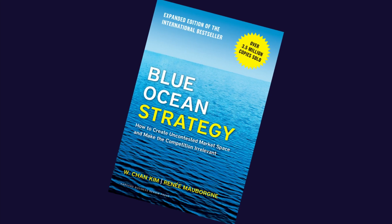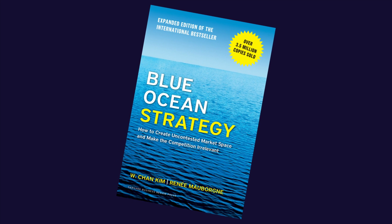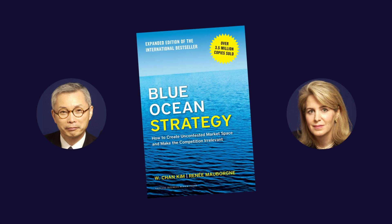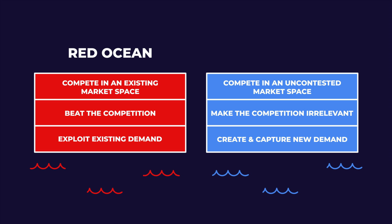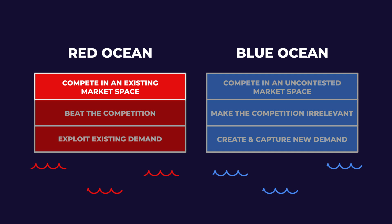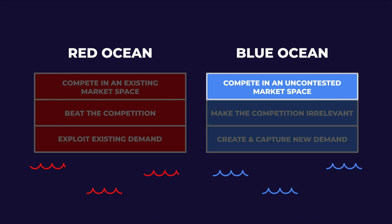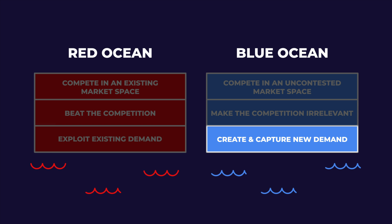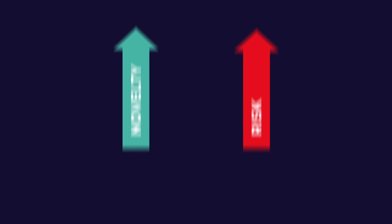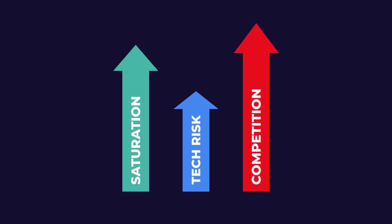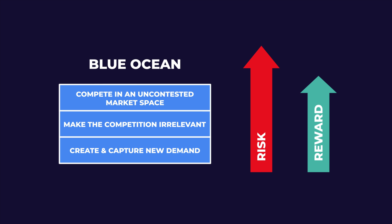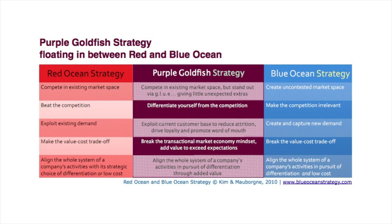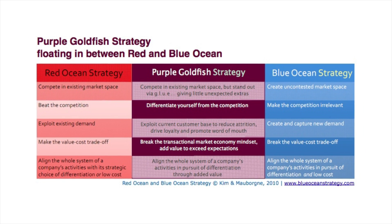Hype cycles can be interesting to understand what type of market you're entering, which brings us to the Blue Ocean Model — a marketing theory and the title of a book published in 2004 by Kim and Mauborgne, professors at INSEAD. They separate product launches into two types: red ocean strategies and blue ocean strategies. It asks the strategic question: do you want to jump into a saturated market or a novel one? Do you want to beat existing competition or build a monopoly from scratch? The more novel an idea or technology, the higher the risk, but also the higher the reward. The Purple Ocean Strategy was also developed as a sort of middle ground.